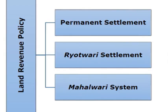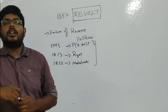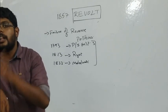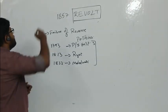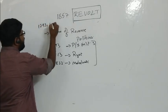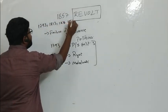These three revenue systems came parallel to the charter acts of 1793, 1813, and 1833. Before these charters, we had the 1773 Regulation Act, which was the first act given to the company. An important tip: all charter acts came with a gap of 20 years — 1773, 1793, 1813, 1833, 1853. If you remember this rule, remembering the years in modern Indian history becomes very easy.